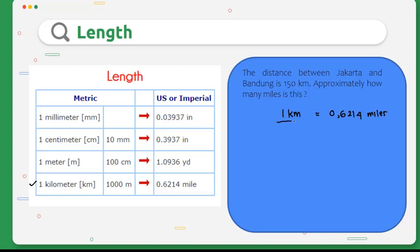We can write 1 kilometer equals 0.6214 miles. Because the distance between Jakarta and Bandung is 150 kilometers, we write 150 kilometers equals x. We have to find the x value. We can do cross multiplication and we will find x equals 0.6214 times 150. So x is around 93.21 miles.